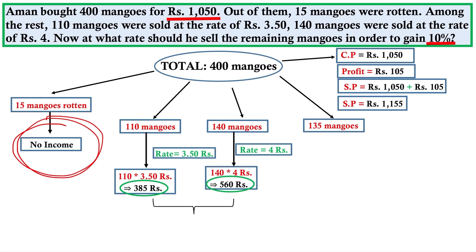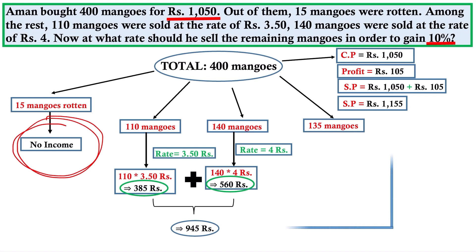We have 110 mangoes and 140 mangoes already sold. The combined revenue from those is 9.45 or approximately 9.50. So we can calculate how much we still need from the remaining mangoes.